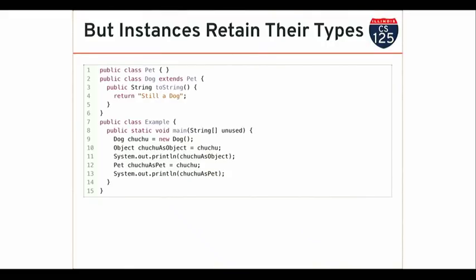Whenever I upcast or downcast objects in Java, Java still knows what the actual type of the object is. So if I override the toString method in a class and then pass it to println, println actually just calls toString. It can do this because it knows that every object in Java has a toString method and therefore can provide some type of useful string representation.